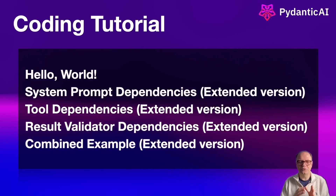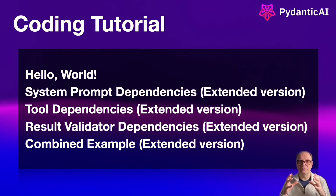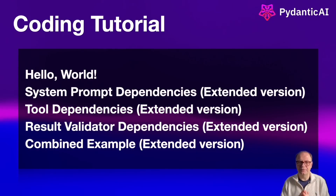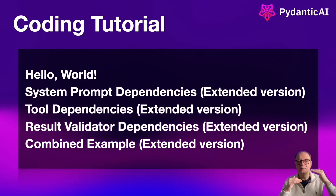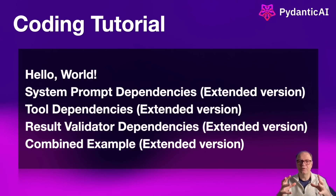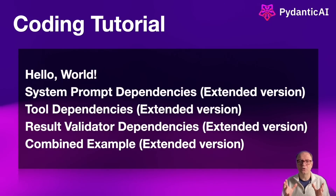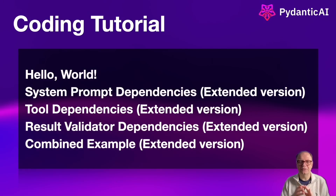In the fourth example, we'll use result validator dependencies to create a medical team of specialist doctors. We'll have a team of four specialists, each receiving a patient case, providing their diagnosis and treatment options. Then a reasoning agent using DeepSeek R1 will produce the final diagnosis and treatment plan.